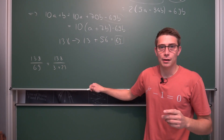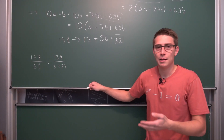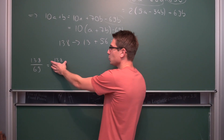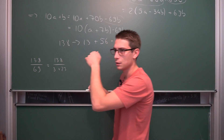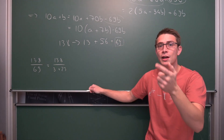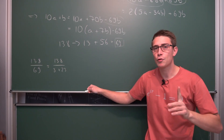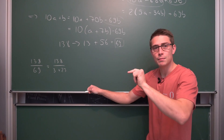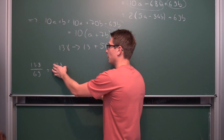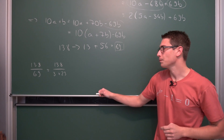Divisibility by 3 is an easy matter: you take the digit sum of the original number. For 138, that's 1 plus 3 plus 8, which is 12. If this digit sum is divisible by 3, then the original number is also divisible by 3. And 12 is divisible by 3, hence the original number is too.